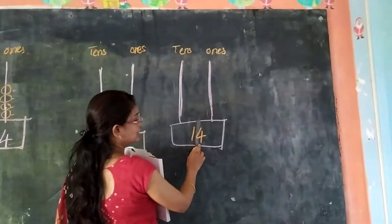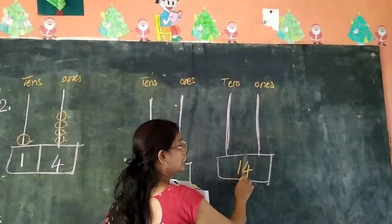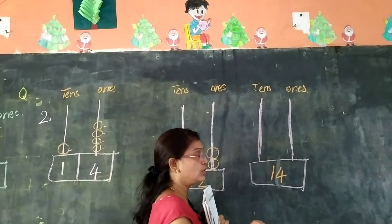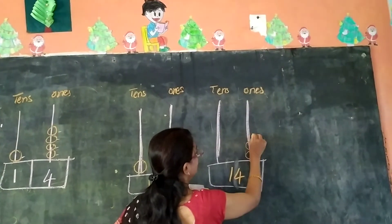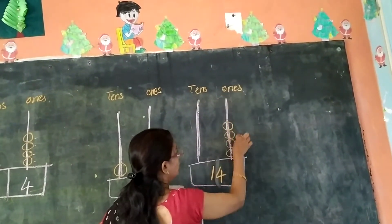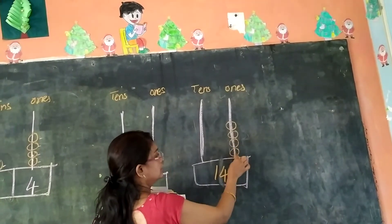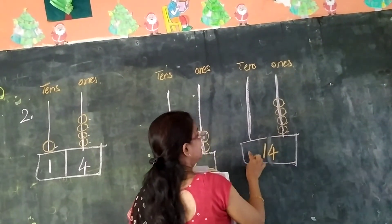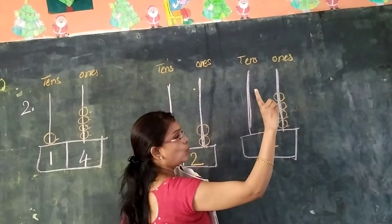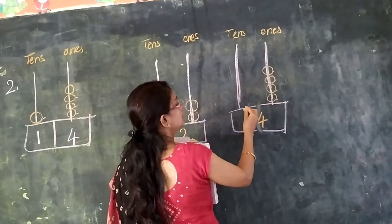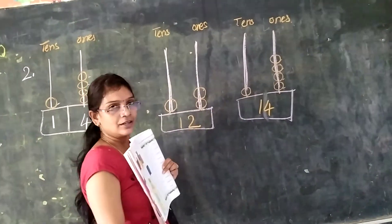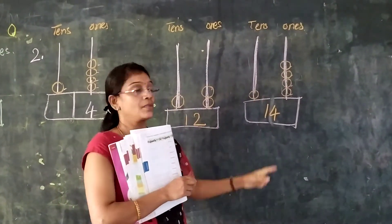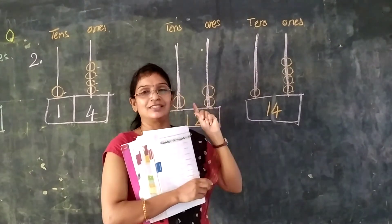Here on the right side, which number is this, children? Four. So four is in which place? Ones place. How many beads do we need to draw? Four beads. Come on: one, two, three, four. This is in ones place — four beads drawn. And here in tens place, how many are there? One is given. So in tens place, how many beads do we need to draw? Only one bead. One ten, four ones. Understood, children? So the remaining two you do and show me as homework.